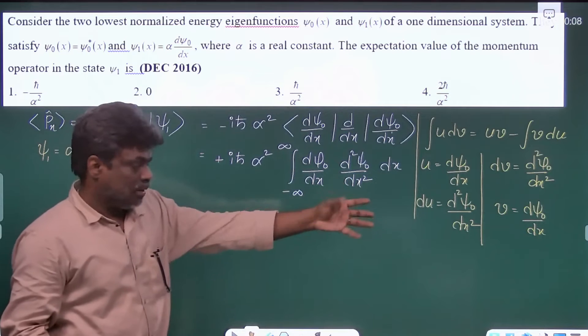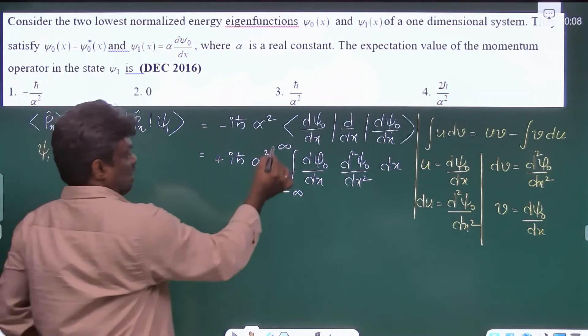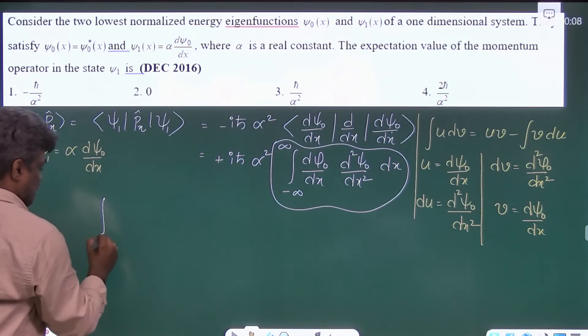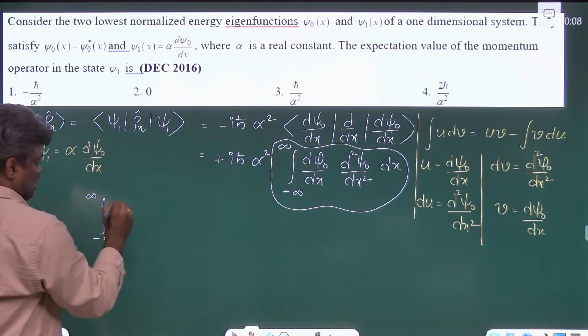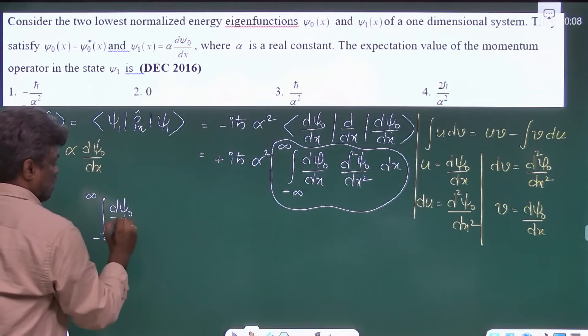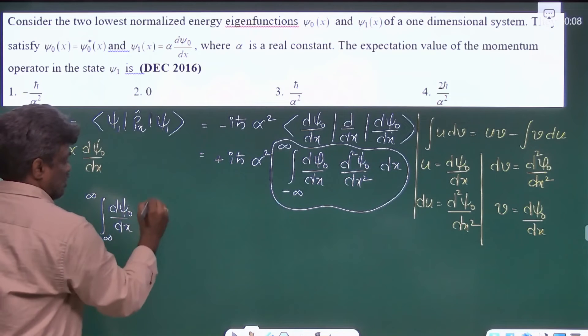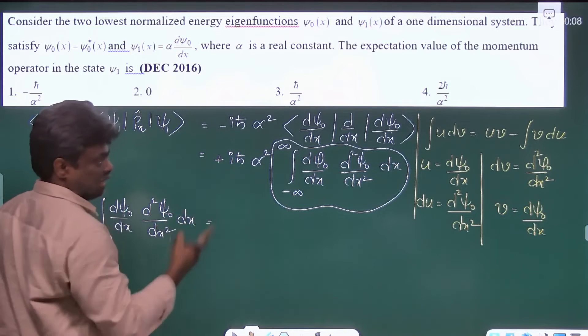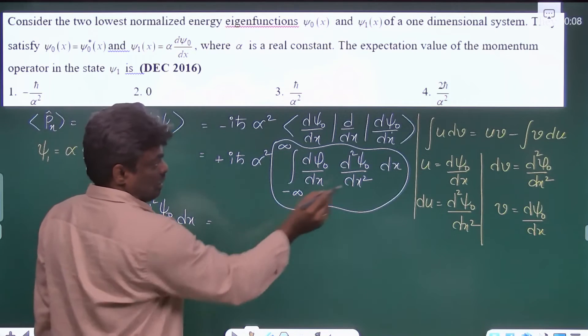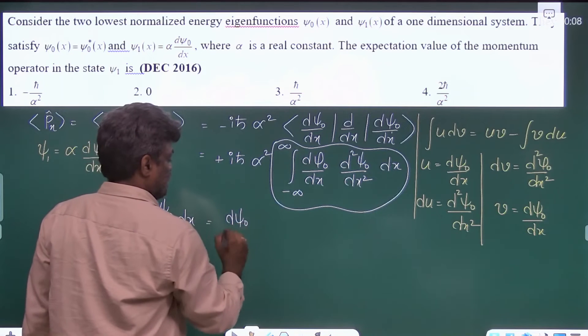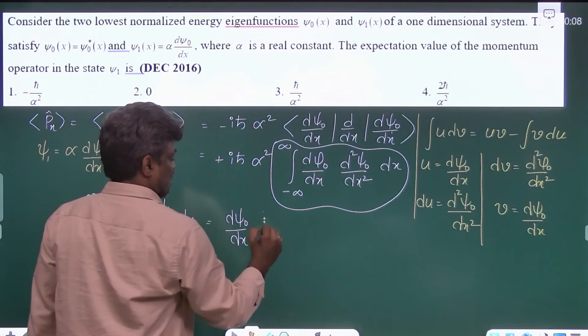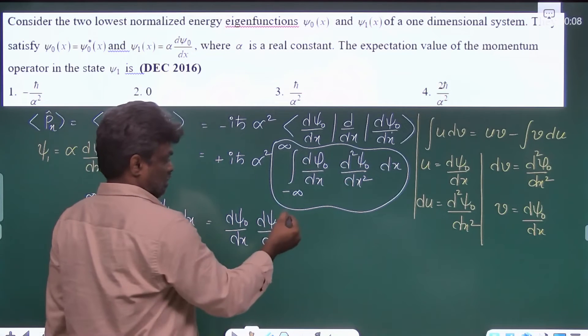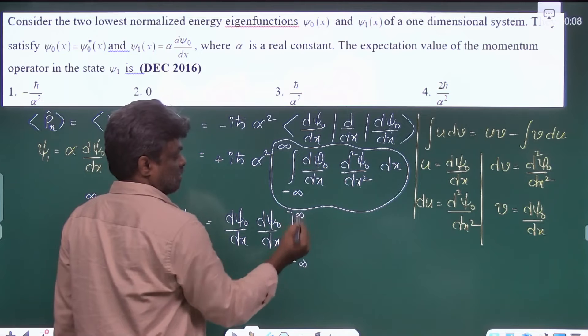So just take these values and substitute. Here I am trying to find out this integral separately. So minus infinity to plus infinity, d psi0 by dx, d square psi0 by dx square dx. This integral is equal to uv—u into v—that is d psi0 by dx into d psi0 by dx, of course limits minus infinity to plus infinity,